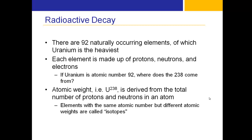There are 92 naturally occurring elements, and uranium is the heaviest of these. Each element is made up of protons, neutrons, and electrons. If uranium is atomic number 92, where does 238 come from? That's the atomic weight, derived from the total number of protons and neutrons.